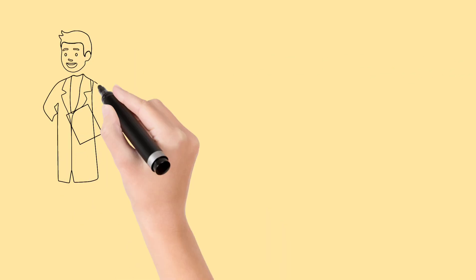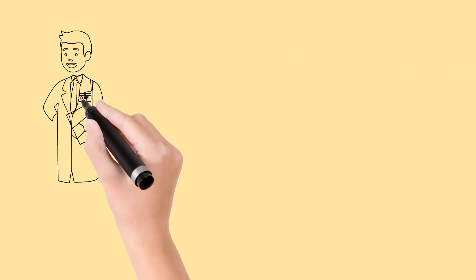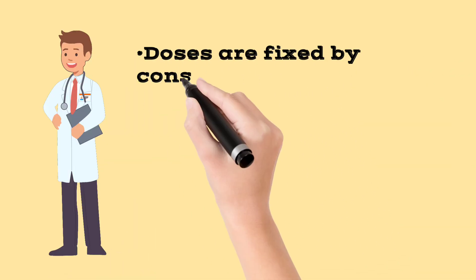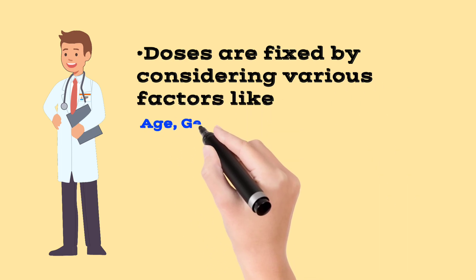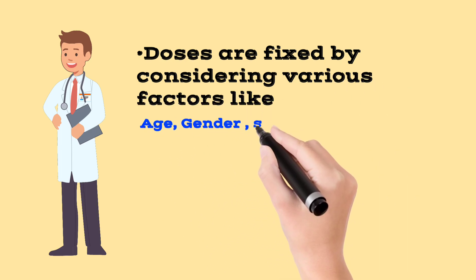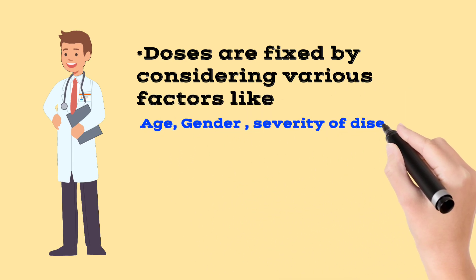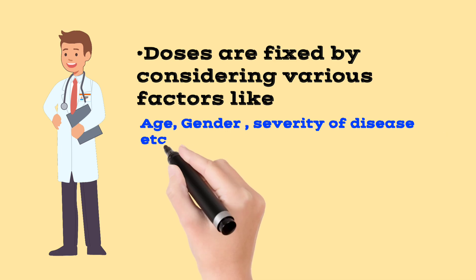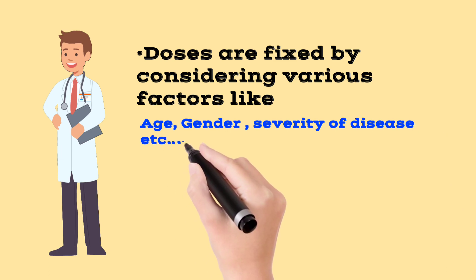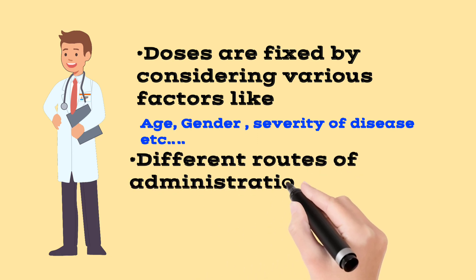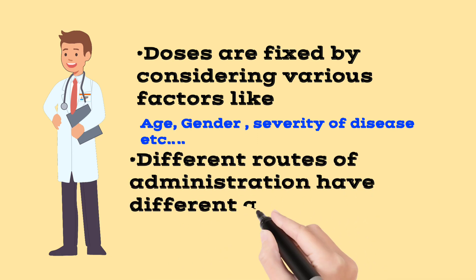The doses or quantity of drugs are fixed by considering various factors like age of the patient, gender of the patient, and severity of the disease of the patient. One important consideration is that different routes of administration have different appropriate doses.